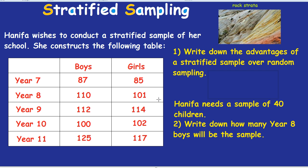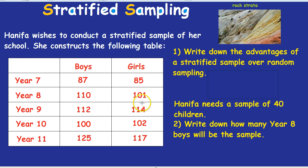Let's look at this question. Hannifer wishes to conduct a stratified sample of her school. She constructs the following table, and we see a whole different group of boys and girls with different numbers — for example, year 9 boys: 112.